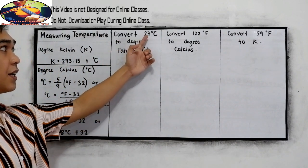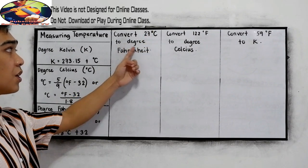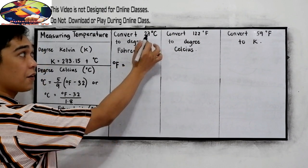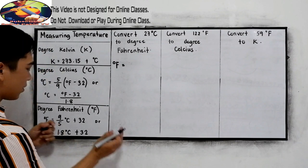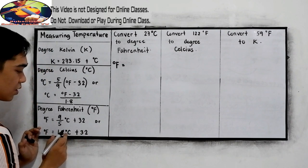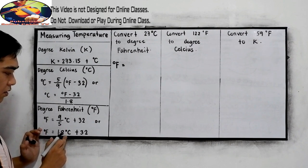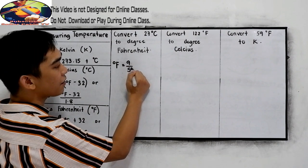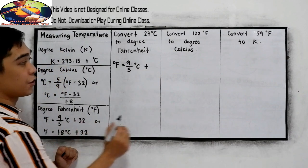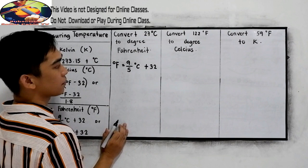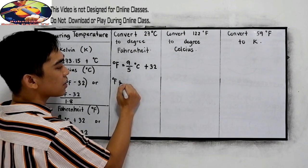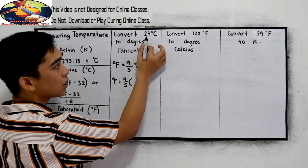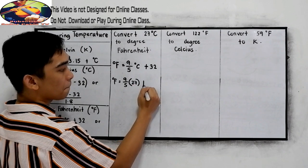Number one: convert 27 degrees Celsius to degree Fahrenheit. We're going to convert to degree Fahrenheit; the given is Celsius. Let's use the formula with 9 over 5. So degree Fahrenheit is equal to 9 over 5 times degree Celsius plus 32. Substituting the given: degree Fahrenheit equals 9 over 5 times 27, plus 32.